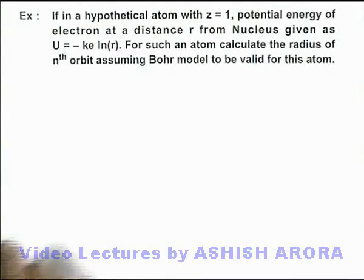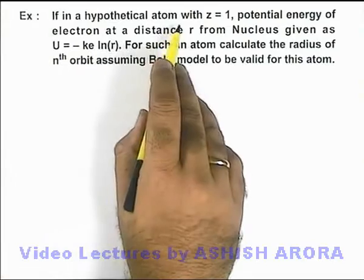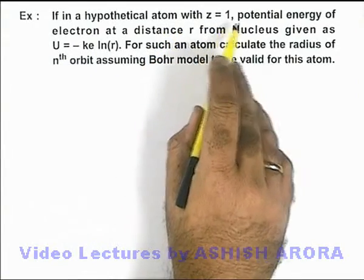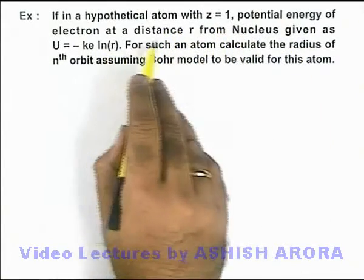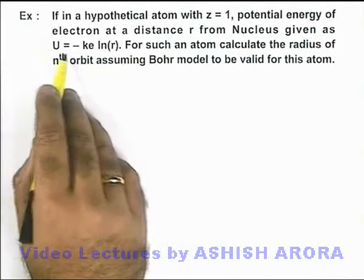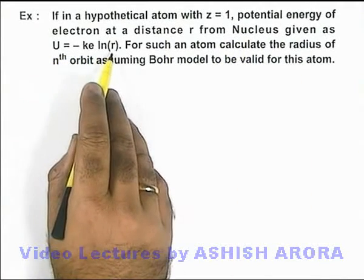In this example, we have a hypothetical atom with z = 1, where the potential energy of an electron at distance r from the nucleus is given as U = -ke ln(r).